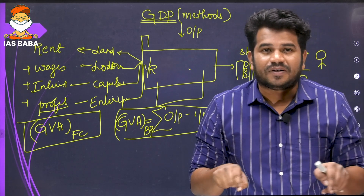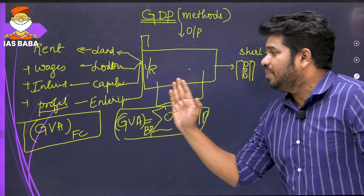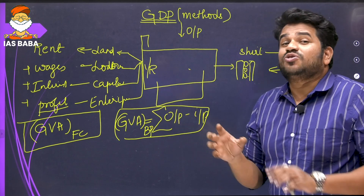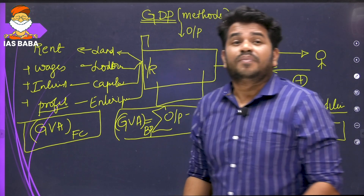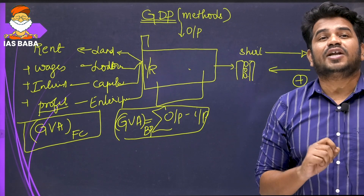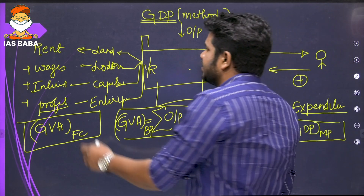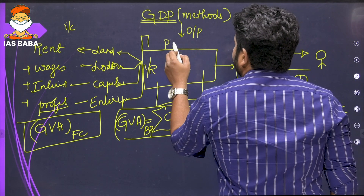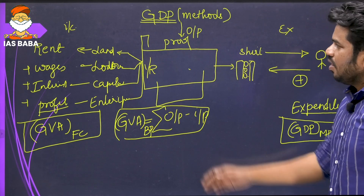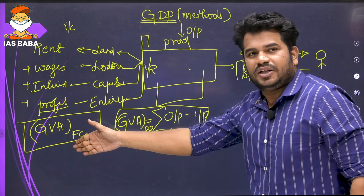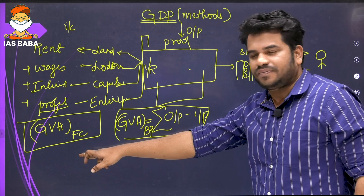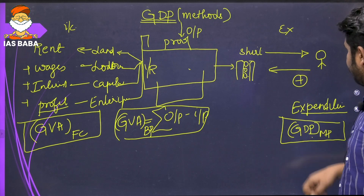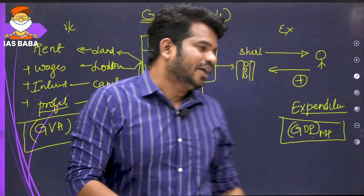On paper, when there is no government and no taxes paid, GDP calculated by all three methods should be the same. But since we pay taxes, there is a difference. So we can calculate GDP by three methods: one is the income or input method, second is the expenditure method, and third is the product or value added method. In the real world where we pay taxes, through the income method we get gross value added at factor price; through the product method, gross value added at basic price; and through the expenditure method, gross domestic product at market price.